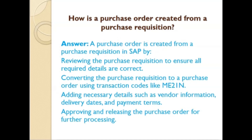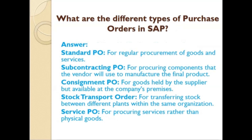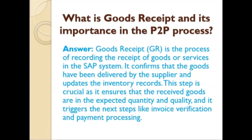What are the different types of purchase orders in SAP? Standard PO: for regular procurement of goods and services. Subcontracting PO: for procuring components that the vendor will use to manufacture the final product. Consignment PO: for goods held by the supplier but available at the company's premises. Stock Transport Order: for transferring stock between different plants within the same organization. Service PO: for procuring services rather than physical goods.